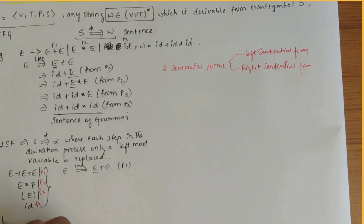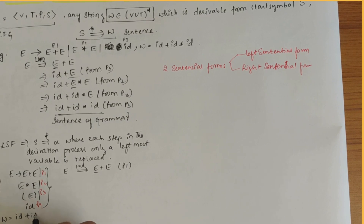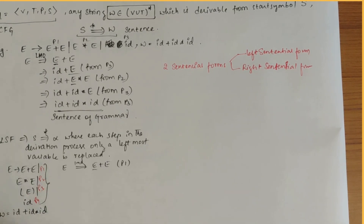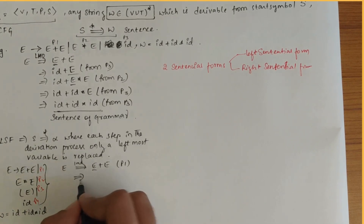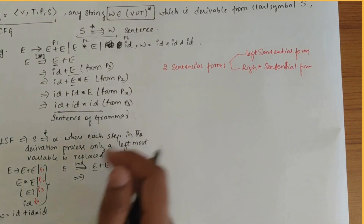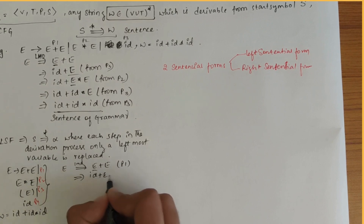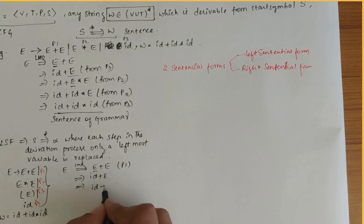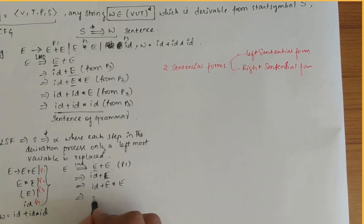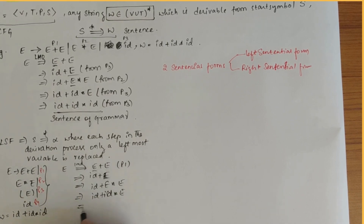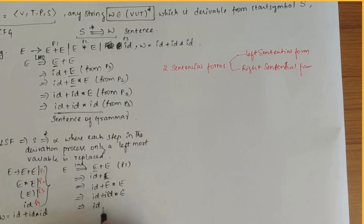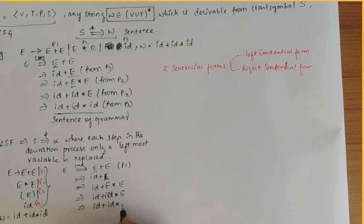The string W we need to obtain is id plus id star id — this is the final string we need to get. I'll write all the steps: id plus E, then id plus E star E, then id plus id star E, then id plus id star id.